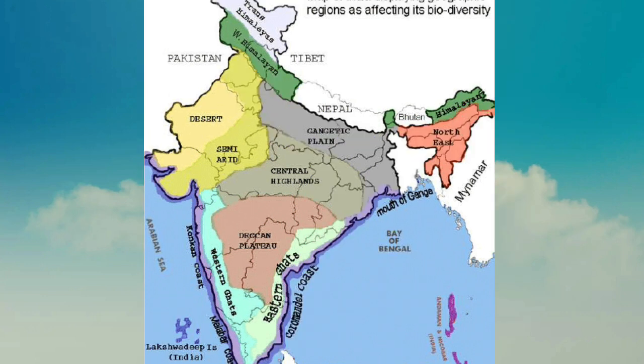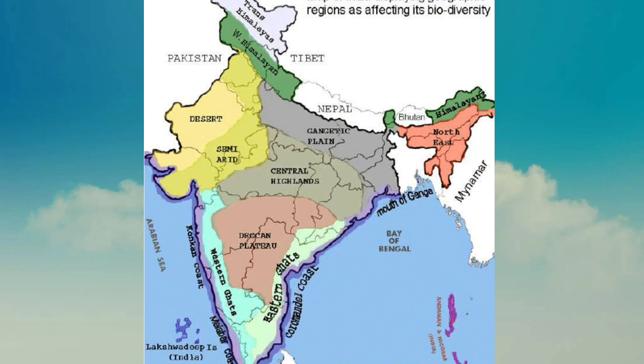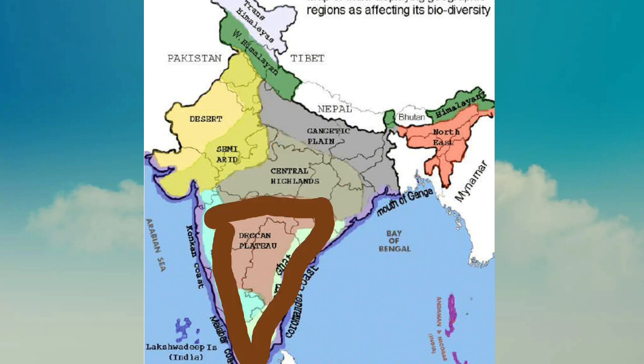The third physical division is the Peninsular Plateau, which lies to the south of the Great Plains. It is the oldest land mass, made up of metamorphic rocks, and has two parts: the Malwa Plateau and the Deccan Plateau. The northernmost part of the Malwa Plateau, the Chotanagpur Plateau, is the richest mineral-producing region of India. The Deccan Plateau extends from the Satpura Hills in the north to Kanyakumari in the south.